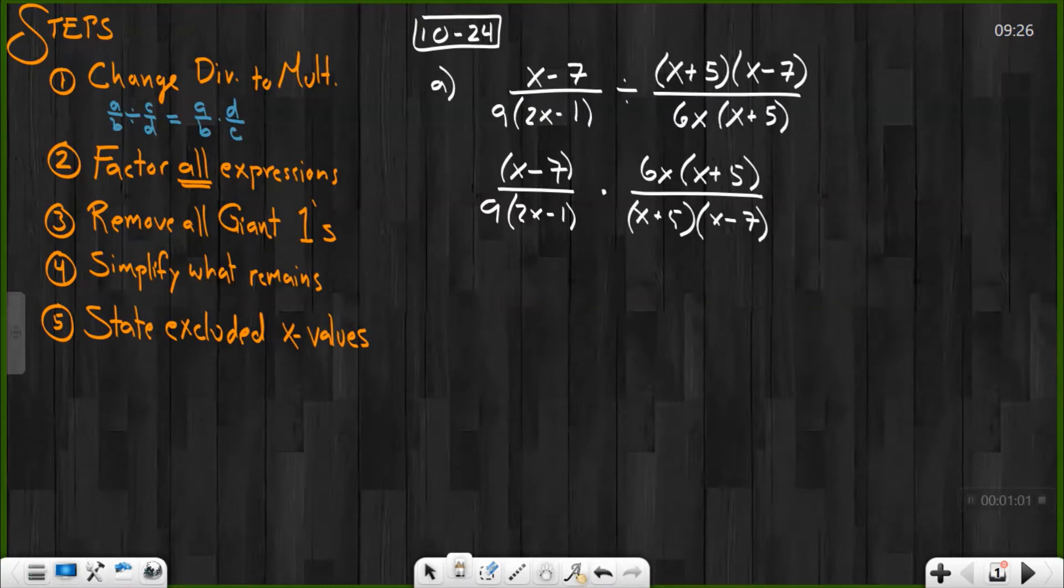I'm just going to put my x minus 7 as a group. Let's start with my numbers first. Look at my numbers, 6 and 9. Well, 3 goes into both those. 3 goes into 6 twice and 3 goes into 9 three times. Let's look at my variables.